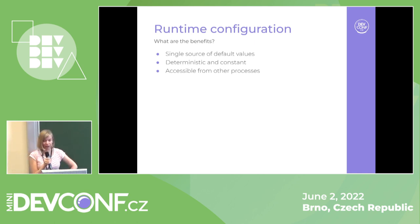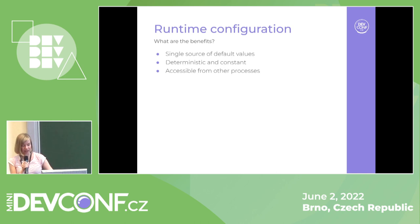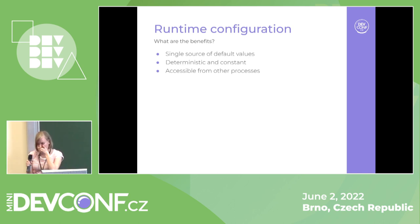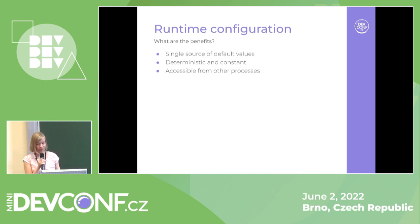The biggest benefit is that we have just a single source of default values. We no longer have horrible branches where we have to check all these values — we just ask this one thing and everything else was already resolved. It's also much more deterministic. This file should be constant — once we generate it, it shouldn't change. That's by design because we don't want to check or update these values later. The file is removed after Anaconda finishes.